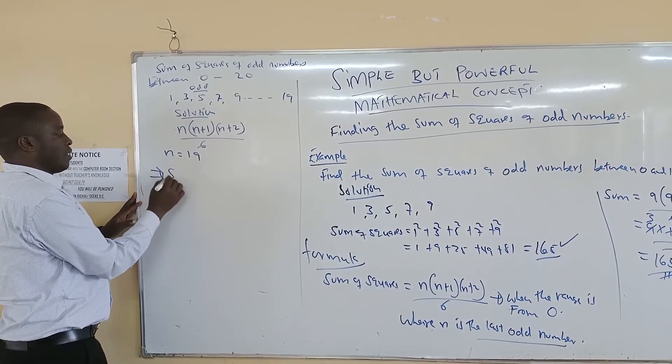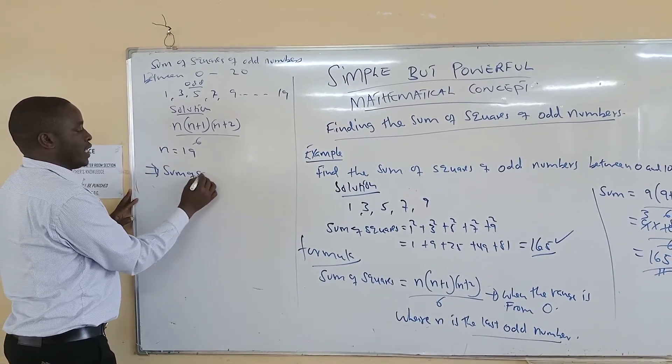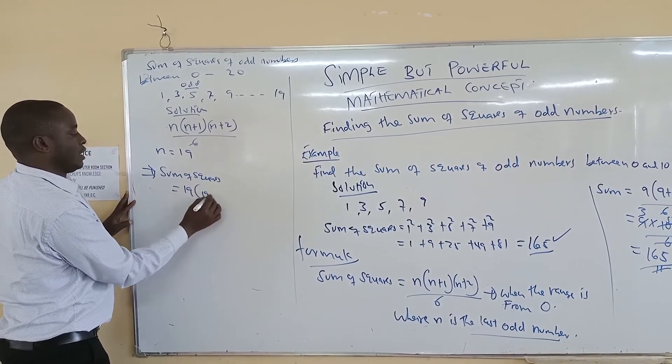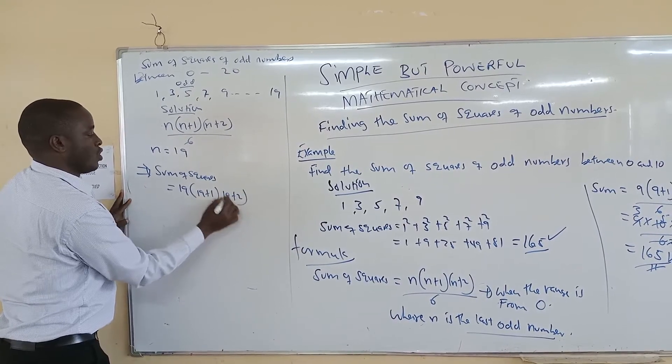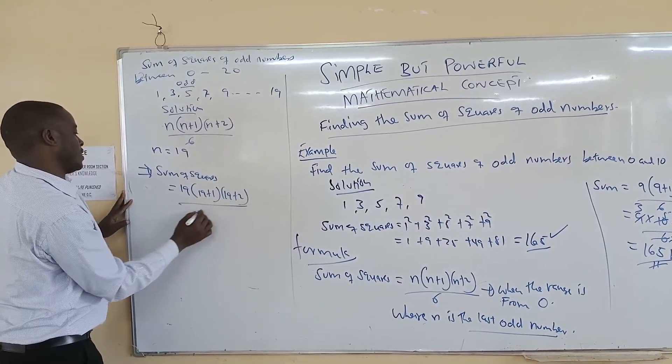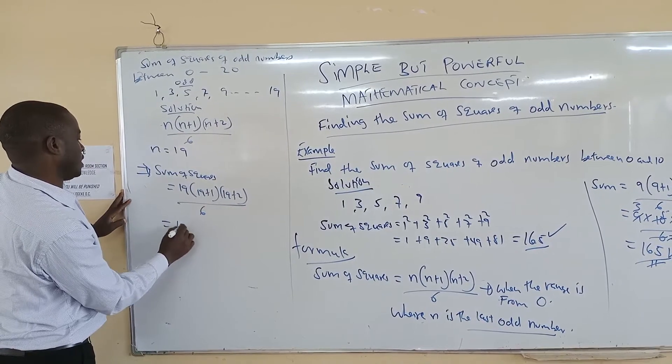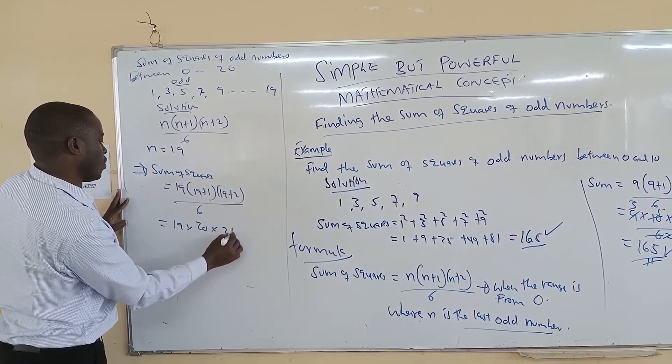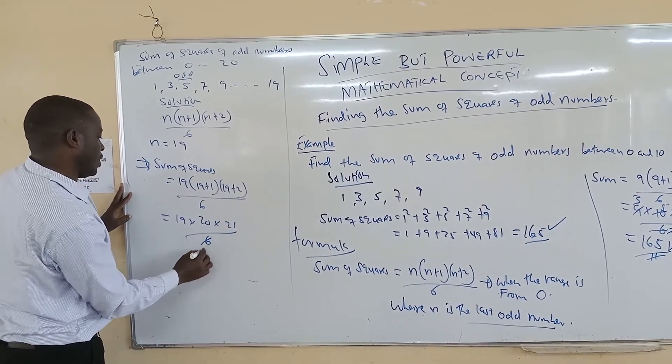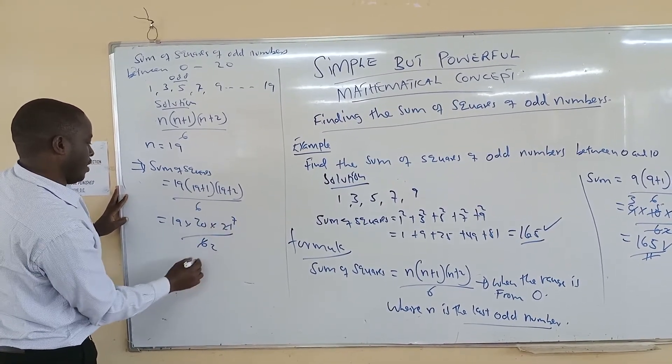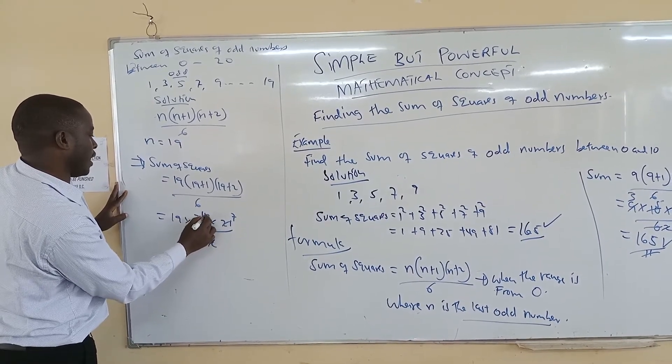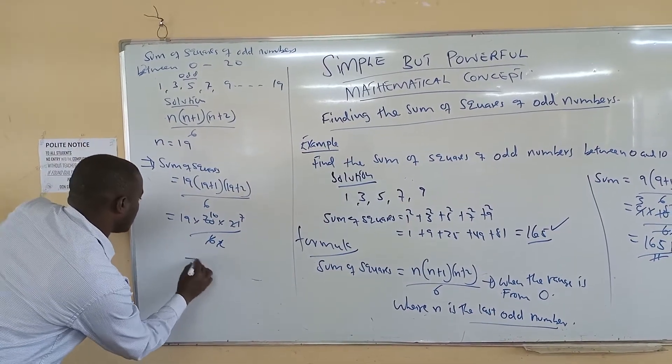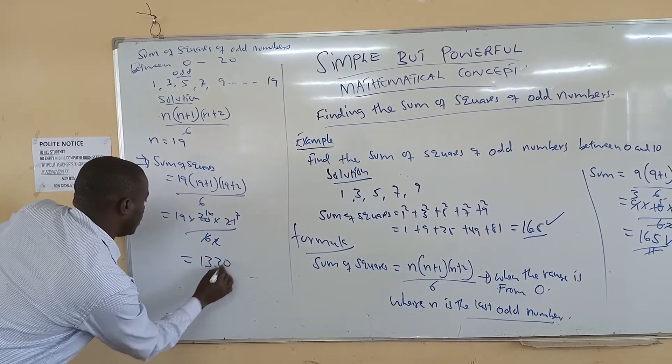And therefore, it implies that sum of squares will be equal to 19 into 19 plus 1, 19 plus 2, all over 6. This is equal to 19 times 20 times 21, all over 6. 3 here is 2, 3 here is 7, 2 here is 10, that is 70 times 19, you get 1330. So that is the sum.